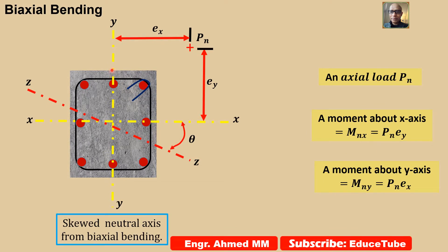Here, the load Pn is acting outside of this section at a distance ey from the x-axis and ex from the y-axis. Then the column section will be subjected to a combination of forces. These three: moment about x-axis, Mnx = Pn × ey, and moment about y-axis, Mny = Pn × ex.